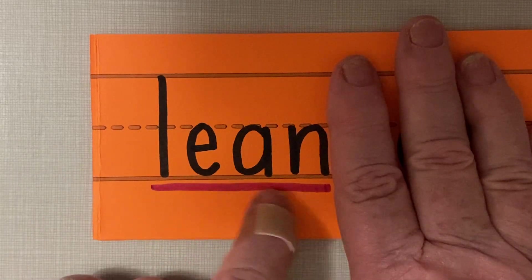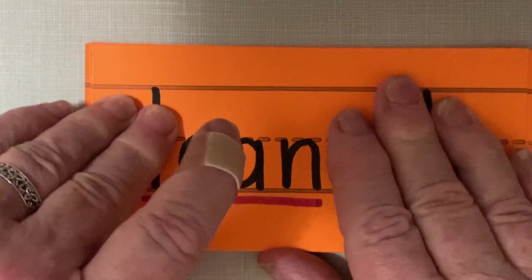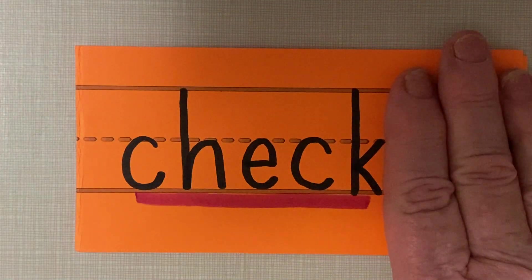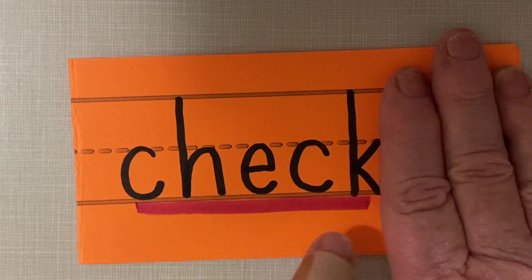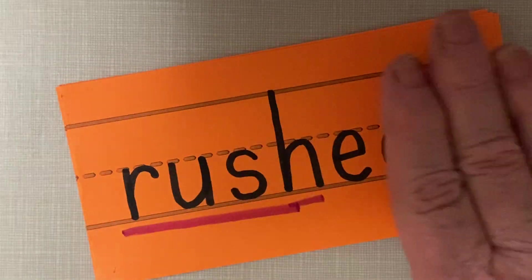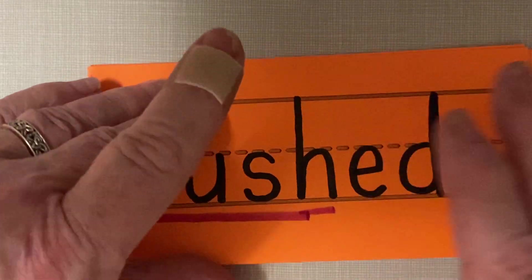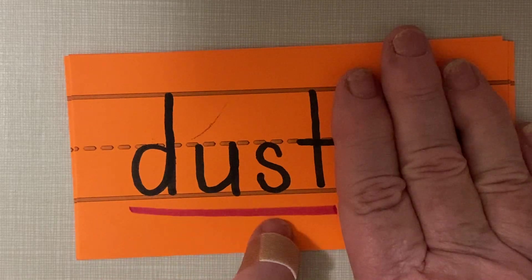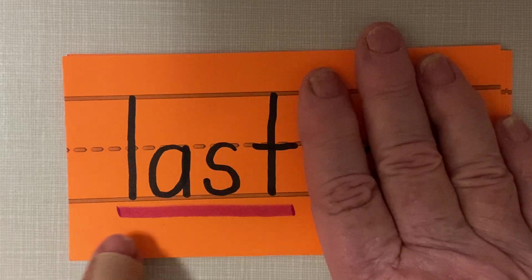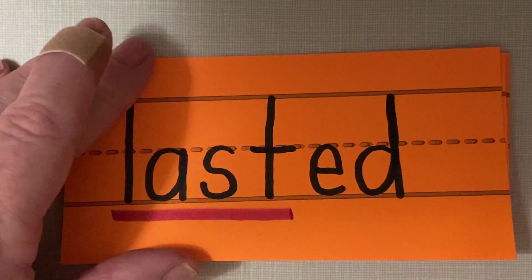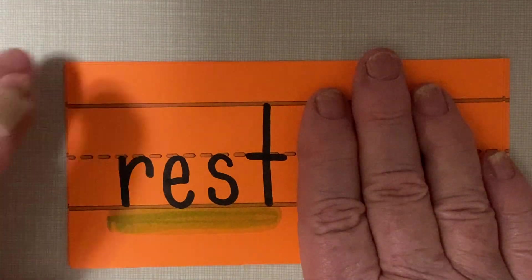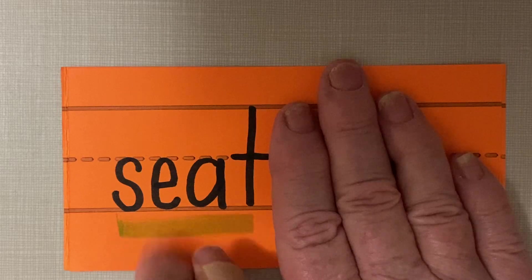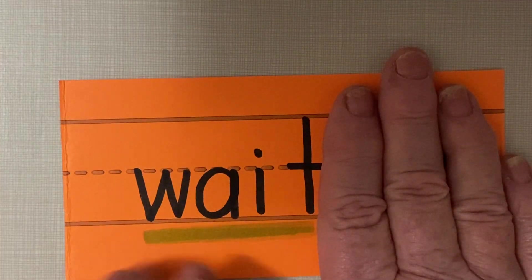Lean, lean, long E, E-A. Pack. Check, remember that it has a C-H and a C-K. Rush. Dust, sound that one out, D-U-S-T. Last, last, last, and it will have ED. Rest. Seat, E-A vowel team, S-E-A-T. And wait, W-A-I-T.